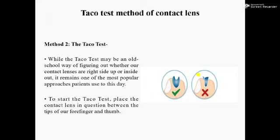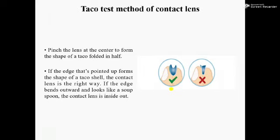In this method, we will place the contact lens between our fingers and thumb. After that, we will pinch the lens at the center to form the shape of a taco folded in half, like the image shown.